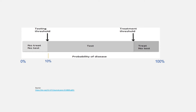On the other hand, if pre-test probability is significantly high and it is beyond the treatment threshold, we can start treatment even before we have performed a diagnostic test. For example, in presence of fever, headache, photophobia, and neck stiffness, we can start treatment for meningitis even before performing a diagnostic test. However, in the majority of cases we need to perform a test to establish or confirm a diagnosis. These threshold points are different for different diseases and depend on nature of condition, severity of condition, and adverse effect of treatment.